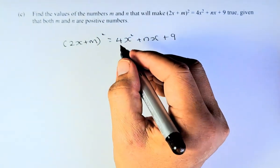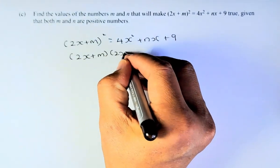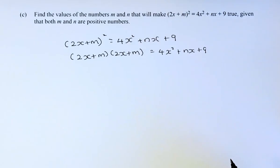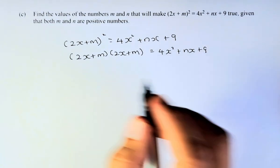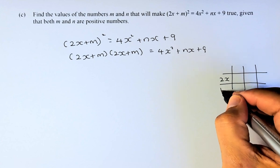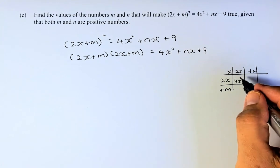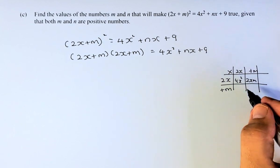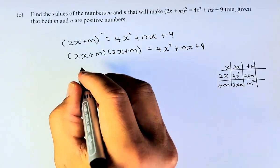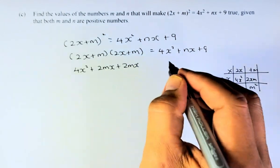So we're going to write: 2x plus m, squared, is equal to 4x squared plus nx plus 9. So we're going to expand that. You can do it this way: 2x plus m, times 2x plus m, equals 4x squared plus nx plus 9. The best way to expand is the grid method. So doing the grid: 2x times 2x will be 4x squared; 2x times m is 2xm, or 2mx; and m times m is going to be m squared. So that expression is going to be 4x squared plus 2mx plus 2mx plus m squared.